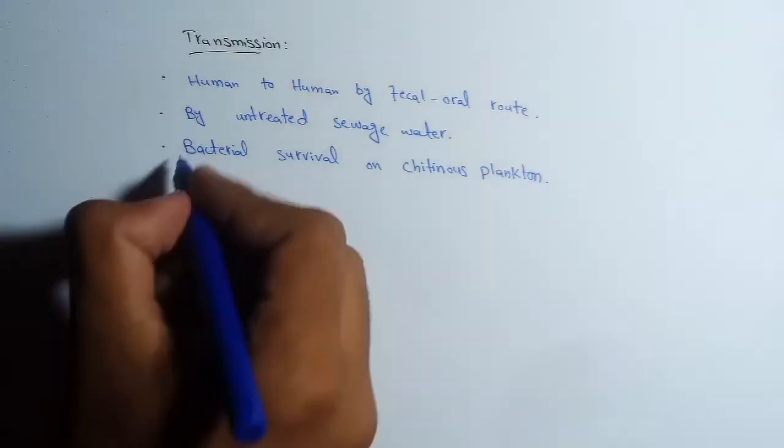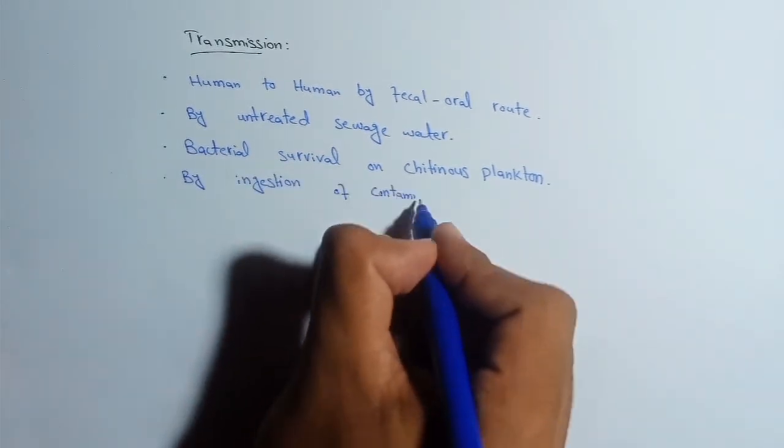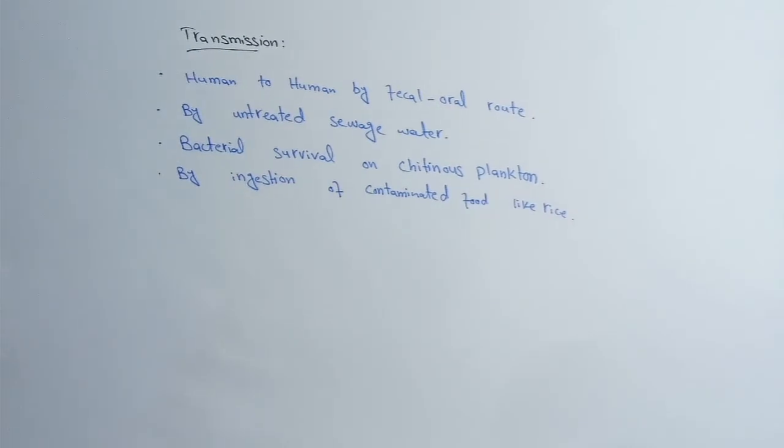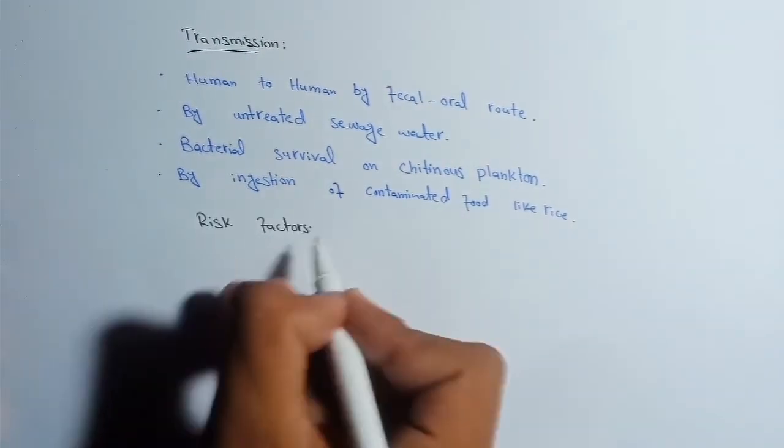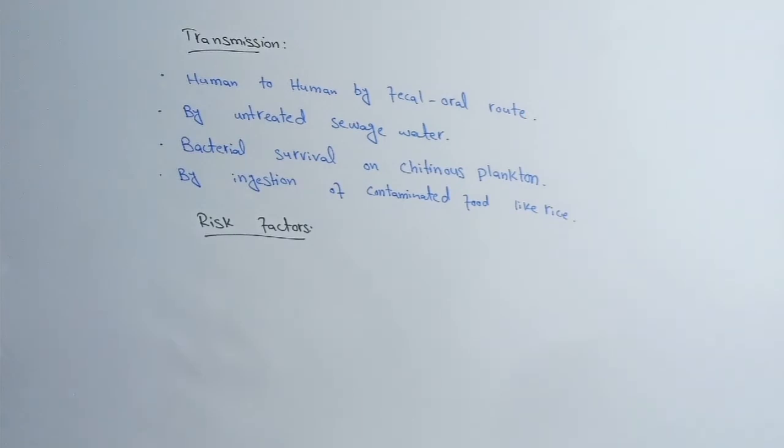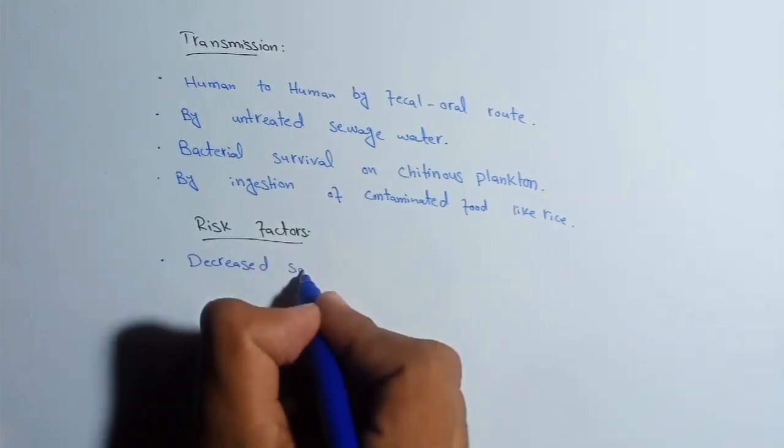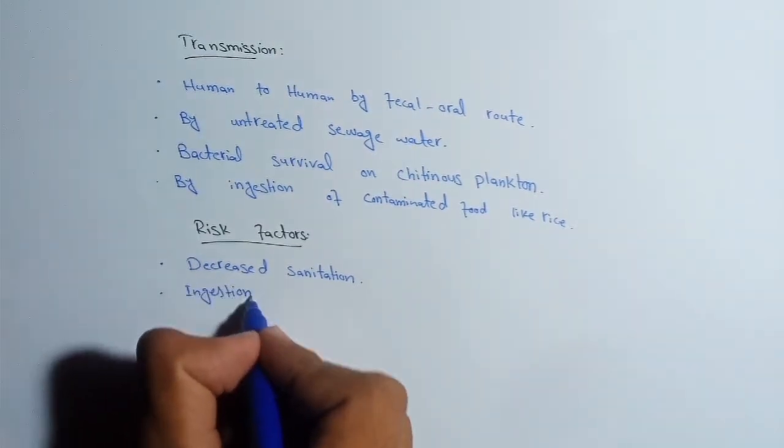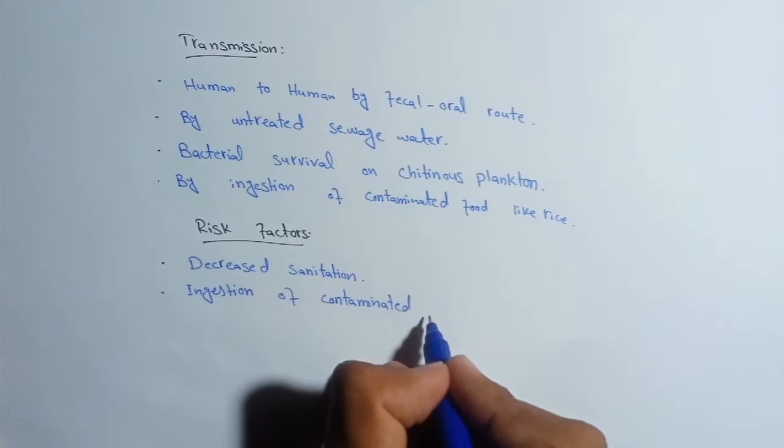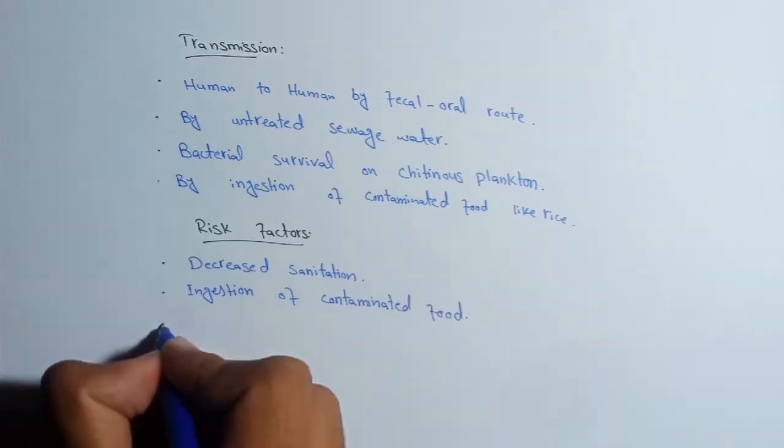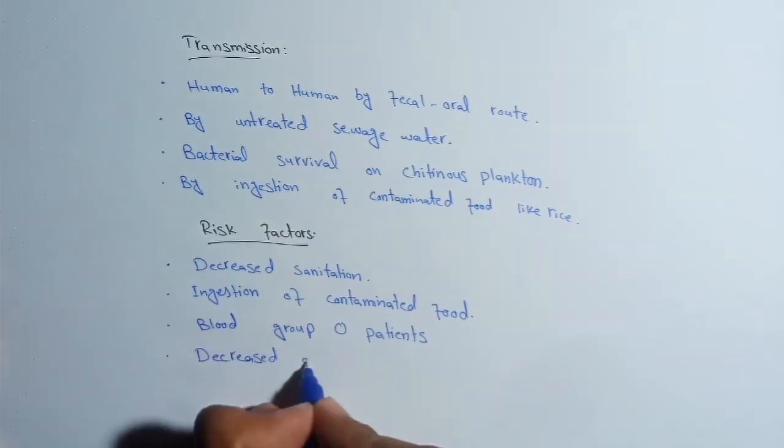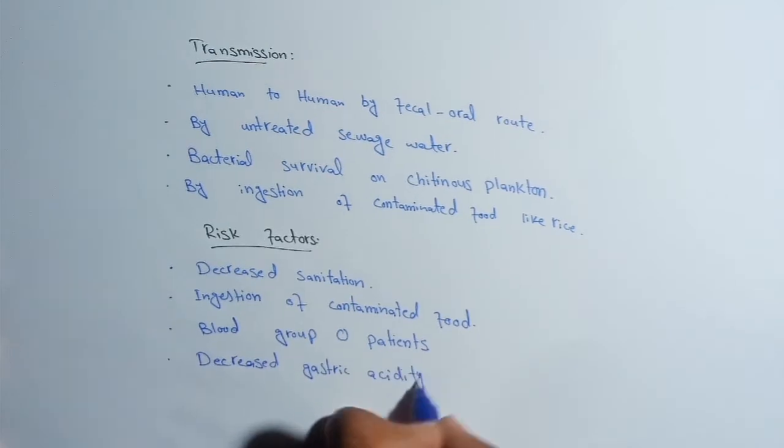Chitinous plankton is the best place for the survival of Vibrio cholerae. It can also be transmitted by ingestion of contaminated food like rice. Now we will study the risk factors for cholera. Decreased sanitation is an important risk factor and ingestion of contaminated food is also a risk factor. Science has proved that blood group O patients are more at risk for cholera and decreased gastric acidity is also the cause of cholera.